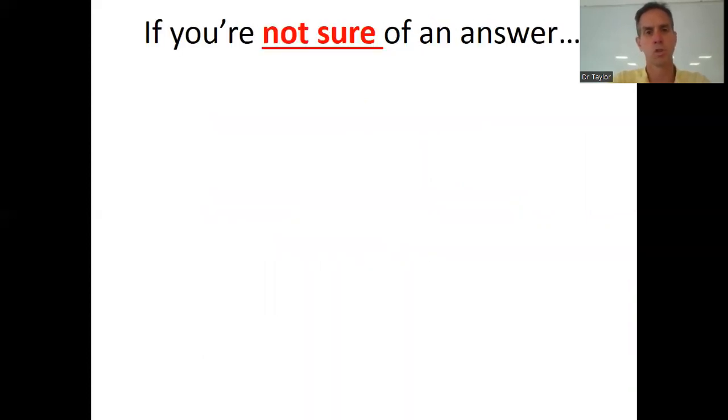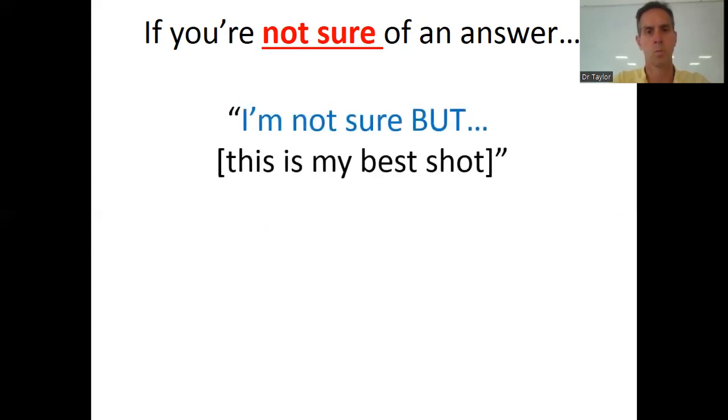If you're not sure of an answer, what should you do? Well, you've got two options which I'm going to give you. So option one is you can say, I'm not sure, but, and then you give it your best shot. That's really good because we get to find out what's in your head. Obviously, we just don't want the right answers always. We want to know what you're thinking. So I'm not sure, but then give it your best shot.